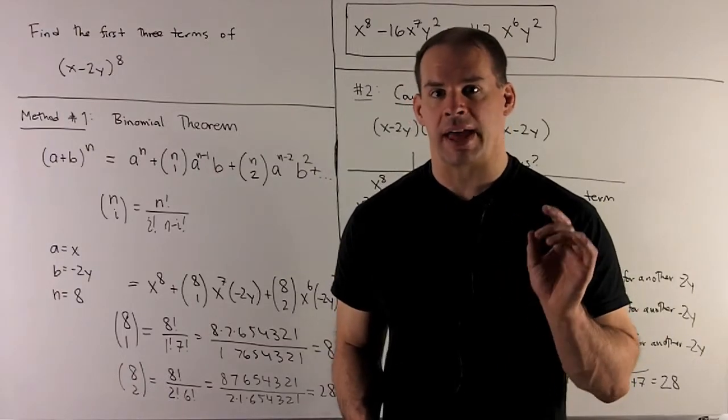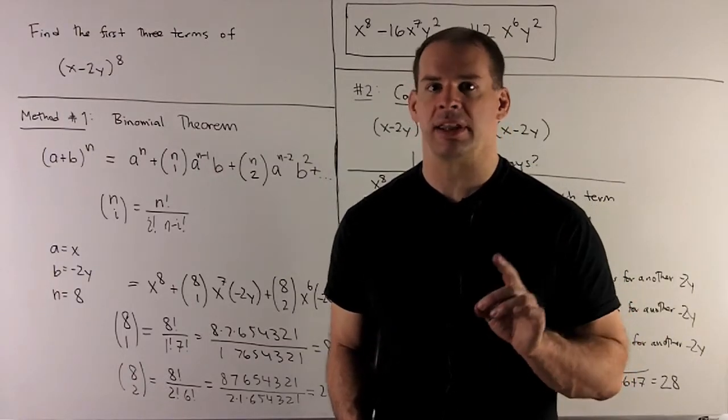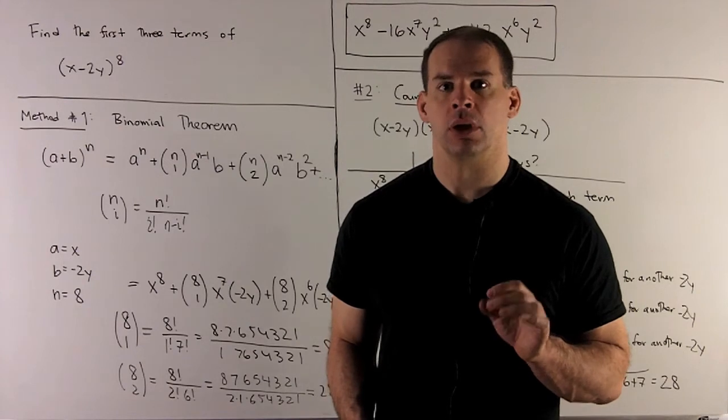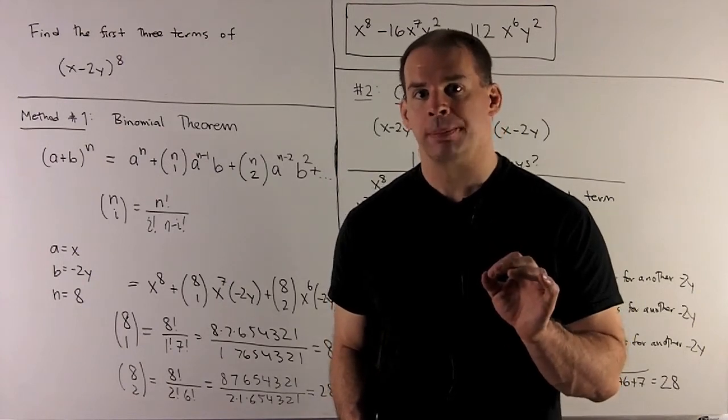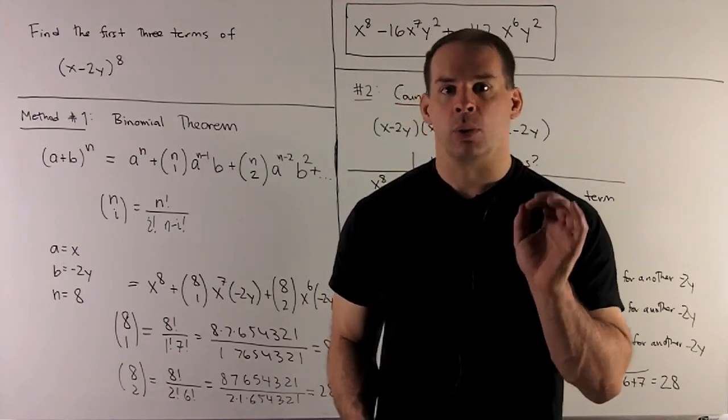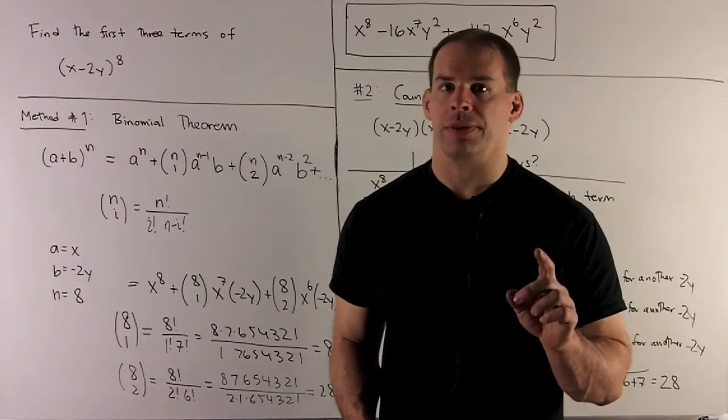Find the first three terms of (x - 2y)^8. We'll have a few methods to get to our answer. First method, the one they want you to use, the binomial theorem.